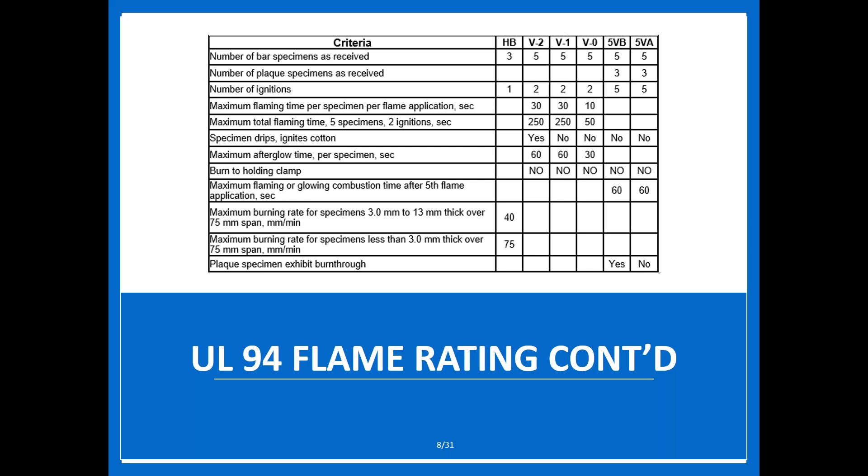Here's a quick guide to help you understand the difference between the ratings, specifically your vertical ratings and 5VA and 5VB. Your HB rating is the only one where you test three different samples; the rest all require five. You have a square plaque for 5VA and 5VB, while the others use a standard rectangular bar. The biggest difference between vertical burns is how long the flame is allowed to continue: V2 and V1 allow 30 seconds, whereas V0 has a maximum time of 10 seconds. They also place cotton underneath — for V2 it can ignite the cotton, but V1 and V0 cannot.